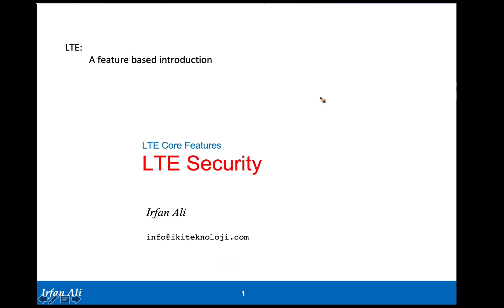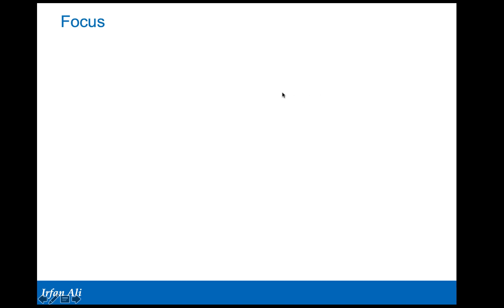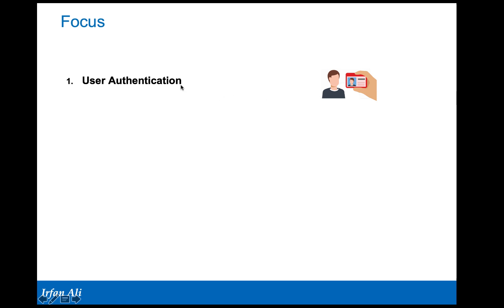Moving on, what we will cover in these lectures starts from the very point where the mobile joins the network. The very first thing when somebody comes into a system is that you authenticate the subscriber or the user. Authentication means asking for proof of identifying who this user is.